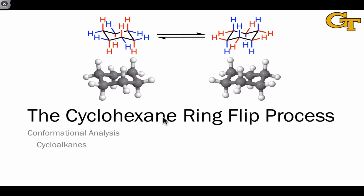The interconversion of chair forms of cyclohexane is known as the ring flip process. In this video we're going to take a detailed look at the mechanism of the ring flip process on a conformational coordinate diagram. This is really the pinnacle of conformational analysis for us, since the motions here are not just simple single bond rotations — there are multiple bond rotations happening at once and the conformations involved are relatively complicated.